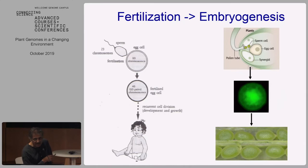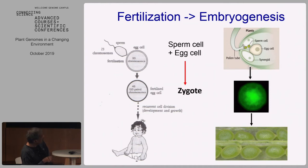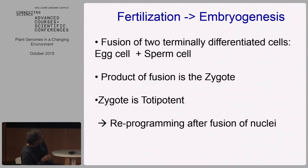I'll start with the basics. The facts of life are that fertilization leads to embryogenesis. When a sperm and an egg get together, you get a cell called a zygote after fertilization. In both plants and animals, you have a smaller sperm cell that fuses with a large egg cell and gives rise to a single cell called a zygote. This single cell then goes on to make a baby or a seed, in the case of animals or plants respectively.